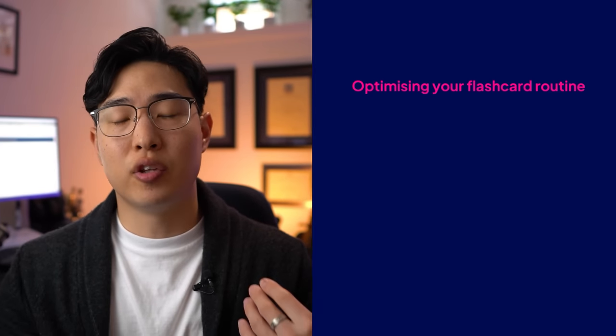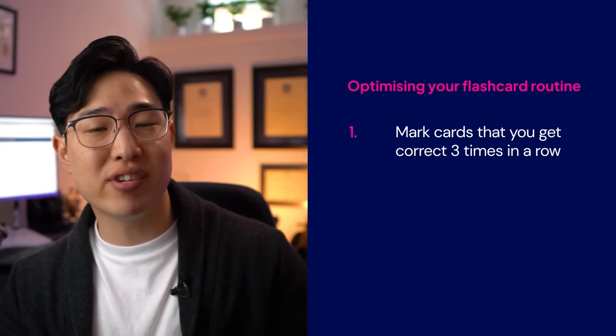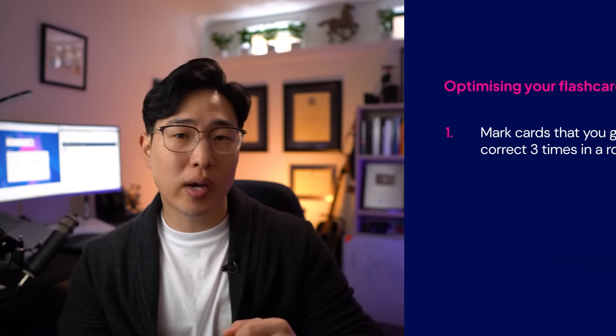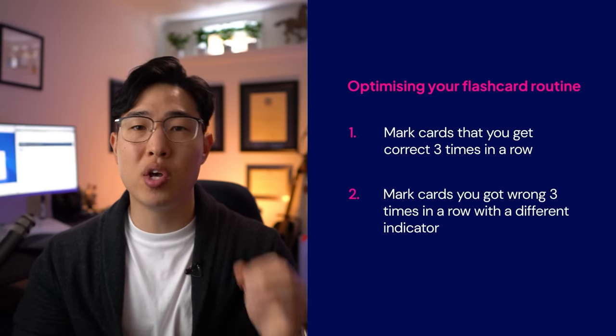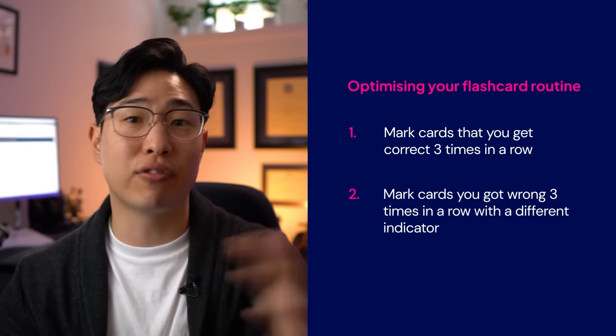Throughout the week in these little pockets of time, you're going to continue to do your flashcards. You should reasonably be able to get through around 100 to 150 flashcards per week just through these random little pockets of time. If you've got more than that, it probably indicates that your method of encoding is actually holding you back instead. As you go throughout the week completing the flashcards, you need to mark the ones that you got correct three times in a row — we want to come back to these later. Likewise, if you get a flashcard incorrect three times in a row, flag that one differently so you can tell the two apart.